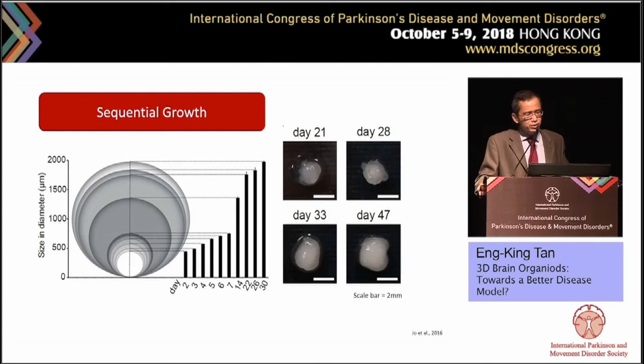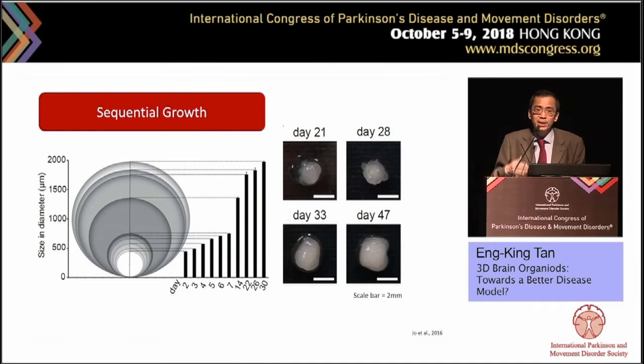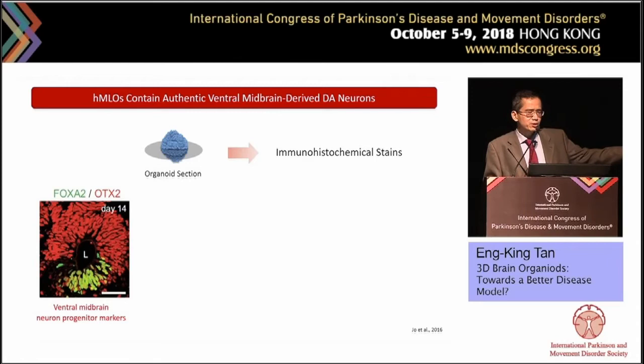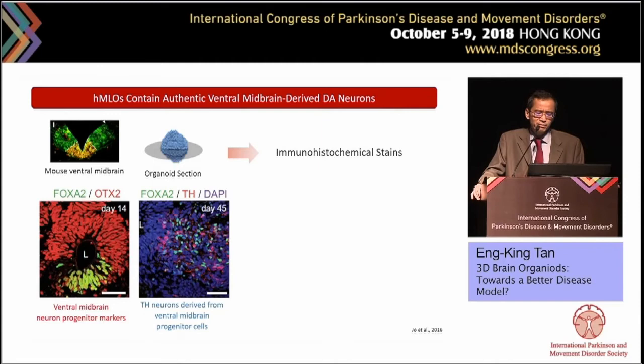To cut the story short, we devised a combination of neuropathic factors that direct differentiation of organoids to the ventral mid-brain, specifically looking at chordalisation, ventralization, and differentiation of dopamine neurons. This shows the sequential growth of the organoids — from 500 micrometers at day 2, growing to day 7, and then exponential growth all the way to 2–3 mm depending on time. When we sectioned and performed immunohistochemistry at day 14, you can see the green staining for FOXA2 — an indication of floor plate progenitors — showing striking resemblance to the mouse ventral mid-brain.